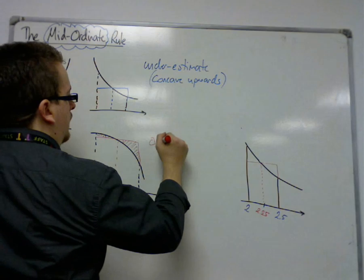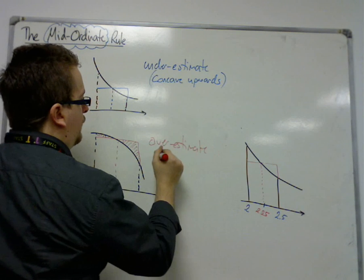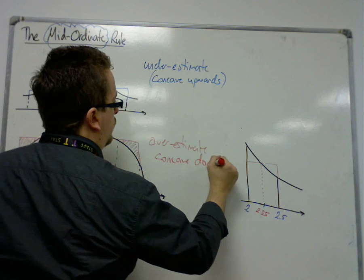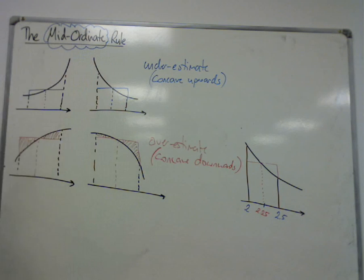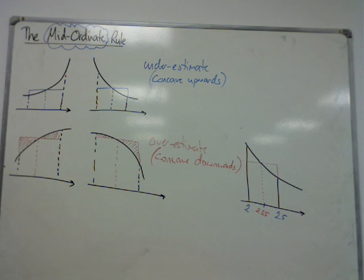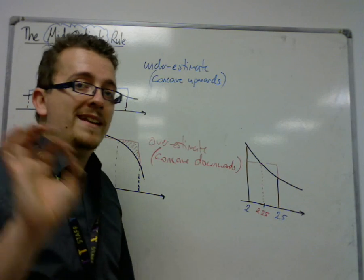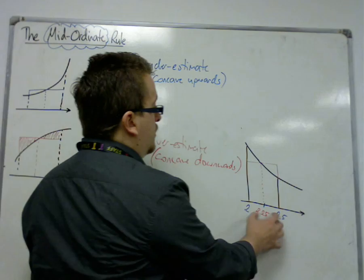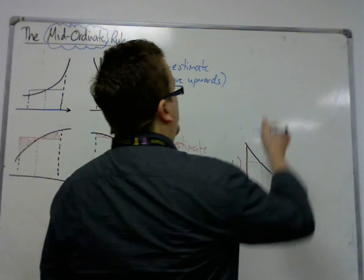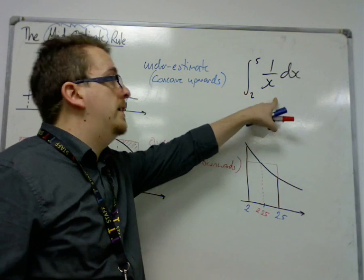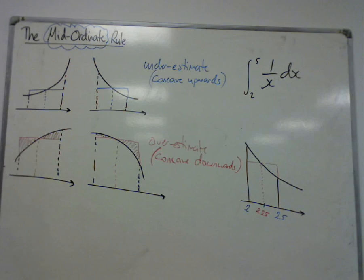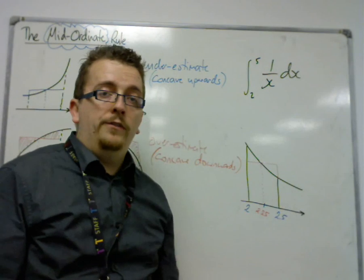So this is an overestimate, and this is referred to as concave downwards. So it's all got to do with the shape of the curve, and it's well worth remembering, because if you had to say whether your curve was an underestimate or an overestimate using the mid-ordinate rule, then you'd have to draw yourself a little diagram to make sure that the examiner knew exactly what you were talking about. So the example that we looked at had to be an underestimate. This is an example that you could do algebraically, because the integral of 1 over x is log x. So that could give you the exact answer, and you could compare it with our answer.